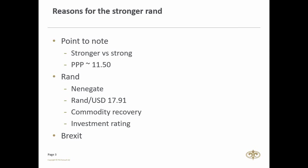Of late, the market has given us a few new terminologies which impact the currency market quite dramatically — things like Nenegate, Brexit, and the latest one, Trumponomics. Nenegate happened in December 2015 when rumors of a cabinet shuffle came true: the finance minister was fired and replaced by an unknown ANC member.